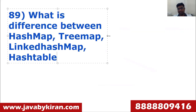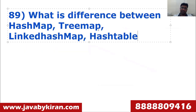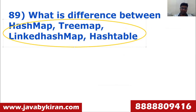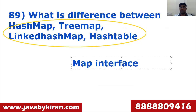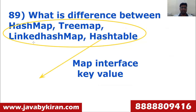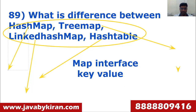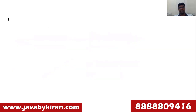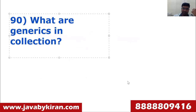For Map implementations, all come under the Map interface. LinkedHashMap maintains insertion order. TreeMap sorts keys. HashMap shuffles elements randomly. These are the key distinctions to remember when explaining Map implementations.